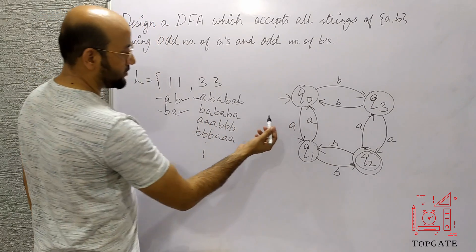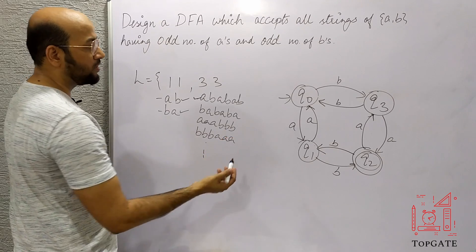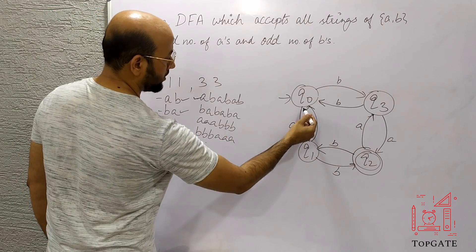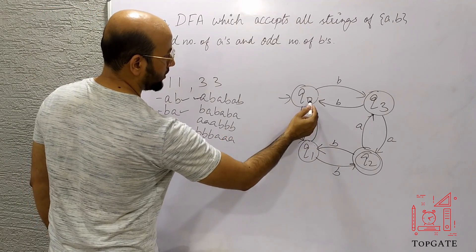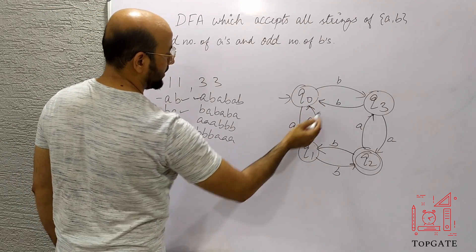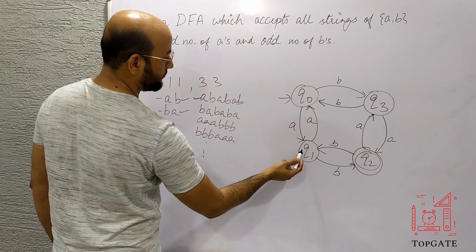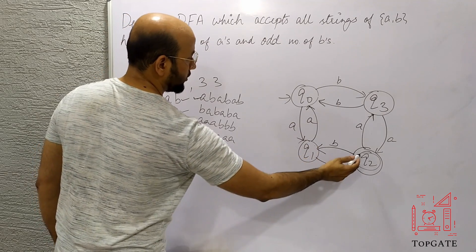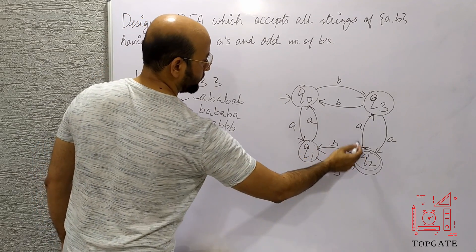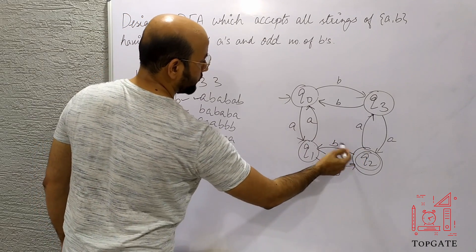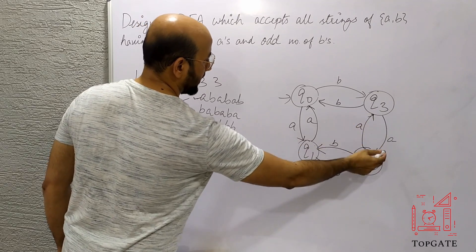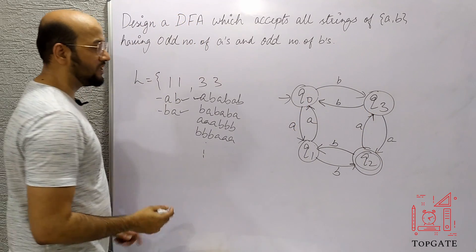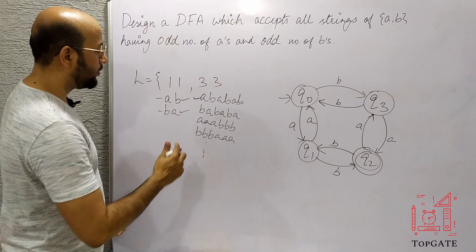Let us see if this DFA is complete or not. On Q0 we have two paths: one for A and one for B. At Q1 we have two paths: one for A and one for B. Q2 has one for A and one for B. Q3 has one for A and one for B. So this DFA is absolutely complete.